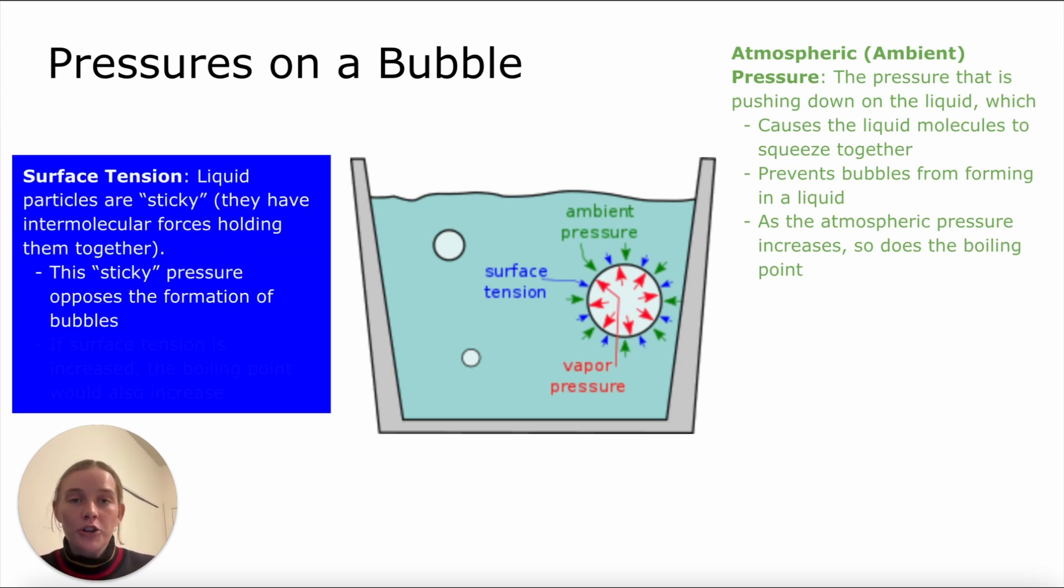In tandem with this, we also have surface tension, which is the fact that liquid molecules have intermolecular forces holding them together. So they're kind of sticky. The sticky pressure opposes bubble formation because the liquid wants to keep touching and hanging out with liquid molecules. If surface tension increases, similar to atmospheric pressure, the boiling point is also going to increase. If we have more pressure favoring the liquid state, then it is going to be harder and we are going to have to input more energy to boil that particular liquid.